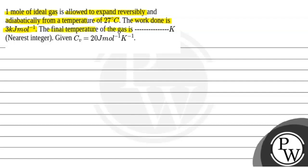The final temperature of the gas is what we have to find out in Kelvin. Given: Cv equals 20 joules per mole per Kelvin.